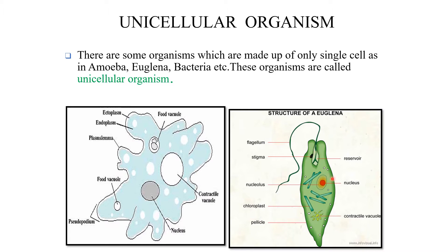This is euglena. It is known as a plant-animal because it has a long hair-like structure called a flagellum, with which it can move — just like an animal. But it also has chloroplast, just like a plant. Because of that, it is called a plant-animal. Its shape is spindle-shaped. The nucleus is present here in the center.